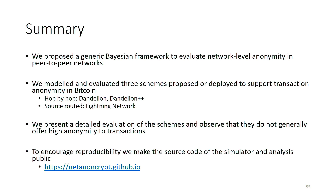To summarize: this work deals with creating a generic Bayesian framework to measure the anonymity of peer-to-peer network anonymity schemes. It is general enough to be applied not only to Bitcoin-based cryptocurrency schemes but others as well. We evaluated three schemes — Dandelion, Dandelion++, and Lightning Network — and our analysis reveals that most of these schemes do not provide good anonymity. All analysis and code are public. Thank you for listening; I'm open to questions.